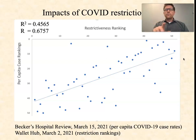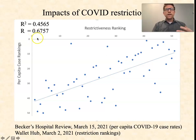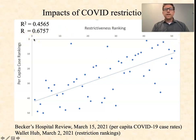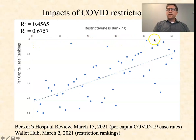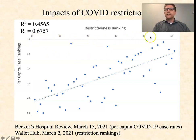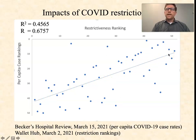On the graph, across the top is the restrictiveness ranking. Number one is the most restrictive according to the 14 criteria from WalletHub; number 51 is the least restrictive. In the per capita case rankings, number one means the most cases and number 51 the fewest. The general trend shows that as states get less and less restrictive moving from left to right, we see higher and higher case rates per 100,000 people.